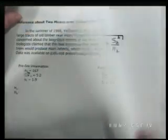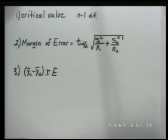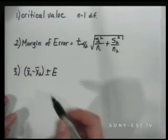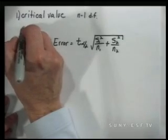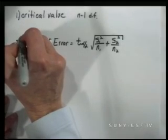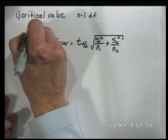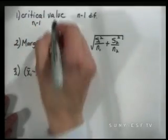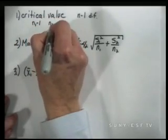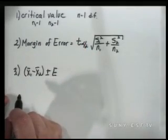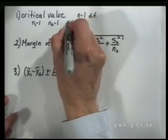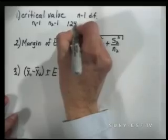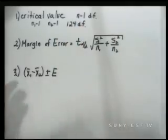The first step is to find the critical value. The critical value with two populations is based on n minus 1 degrees of freedom. In this case, we're going to choose the lesser of n₁ minus 1 and n₂ minus 1 to determine our degrees of freedom, which gives us 124 degrees of freedom.